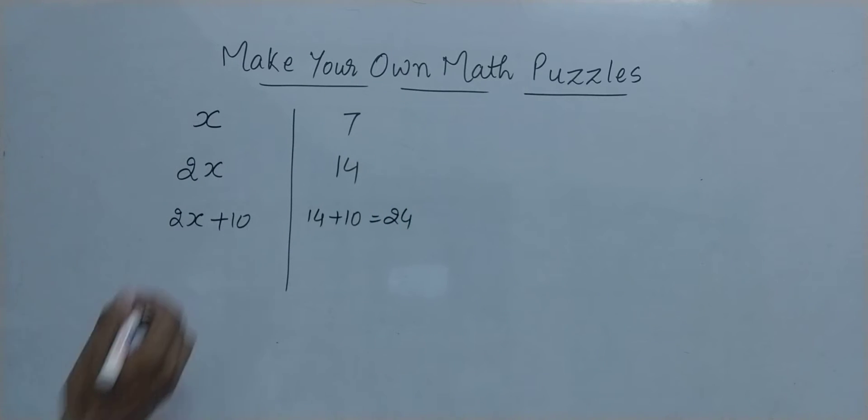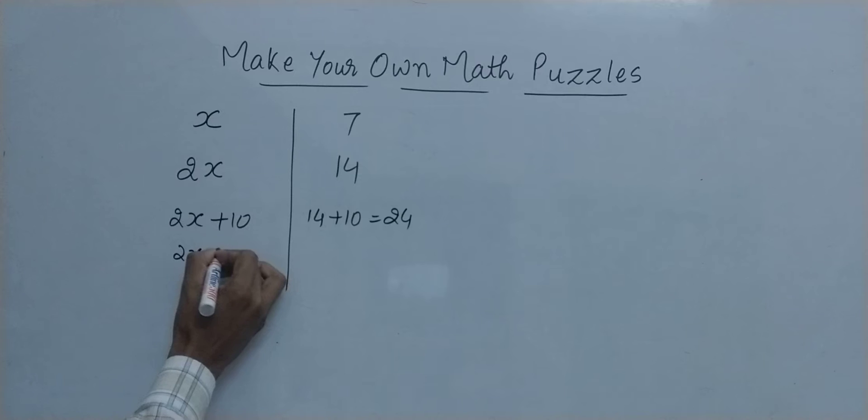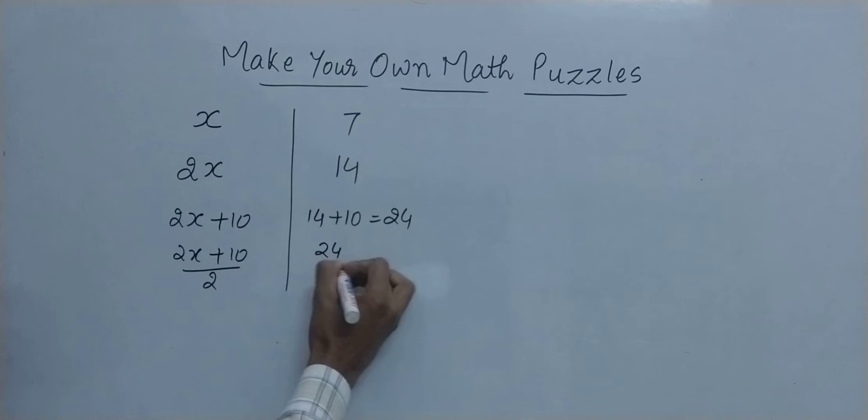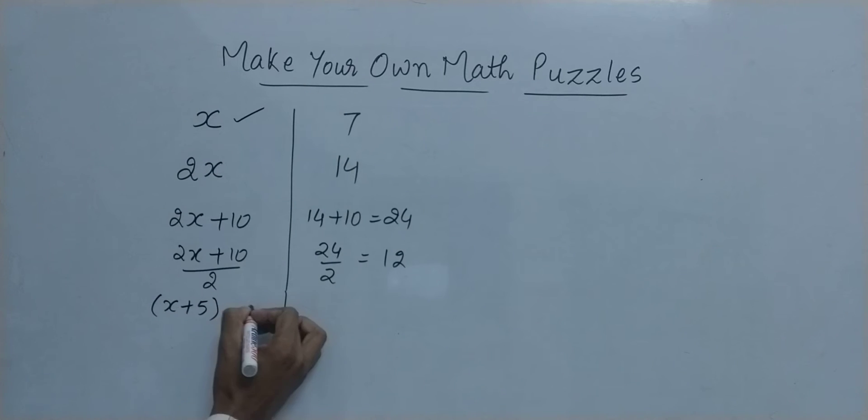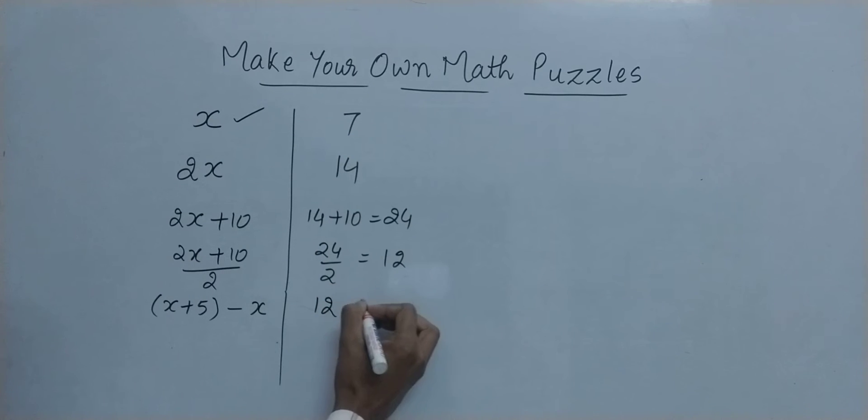Then ask him to take half of that, so divide by 2. He divides 24 by 2 and converts that into 12. Then, the 2 cancels out, this becomes x plus 5. Ask him to subtract the number he had thought from this. So if he subtracts the number he had thought, 7, from this, he is going to get 5.